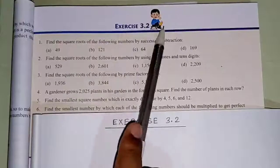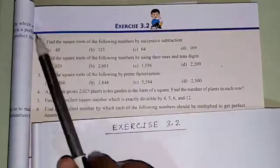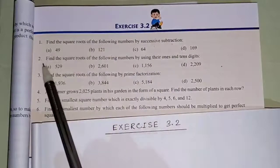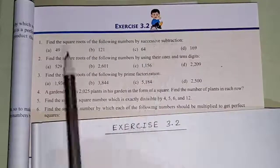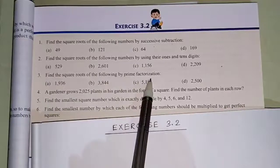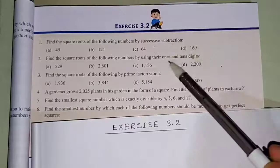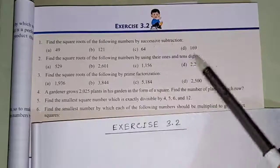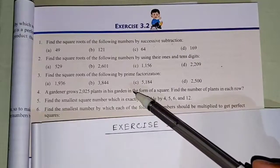Hello students, today I am going to start your exercise 3.2. In question number 1 we have to do the successive subtraction method, in question number 2 we have to do the 1's and 10th digit method, and in question number 3 we have to do the prime factorization method. All these methods I have already explained in my previous video.